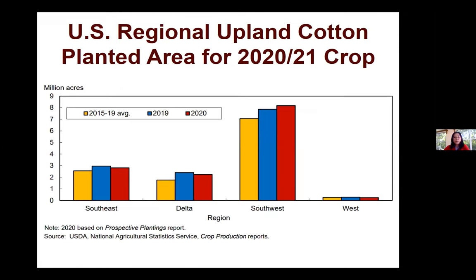Now let's take a look at planting decisions from the prospective planting report. This report shows total U.S. acres projected nearly unchanged in 2020 compared to 2019. Farmers surveyed early in March intended to plant approximately 13.7 million acres of cotton in 2020. However, this forecast might be a little high and may not fully capture the effect of the sharp decline in cotton prices since then. A new estimate will be updated at the end of June from the last acreage report. With prices so low, what can the industry or cotton farmers do to mitigate their risk?